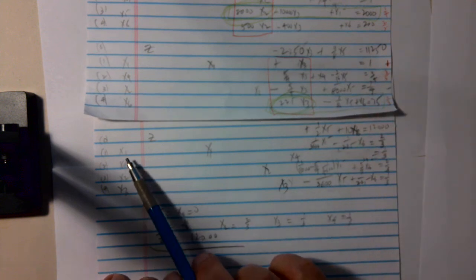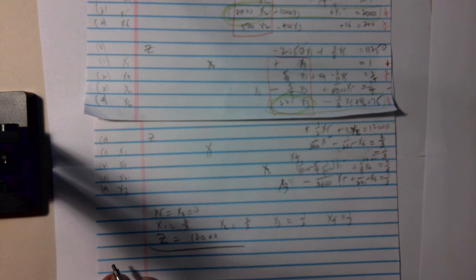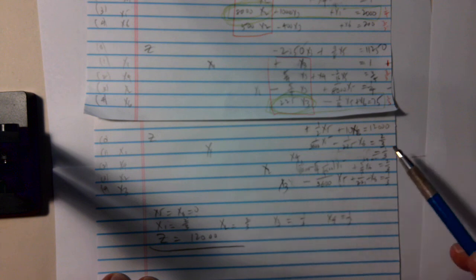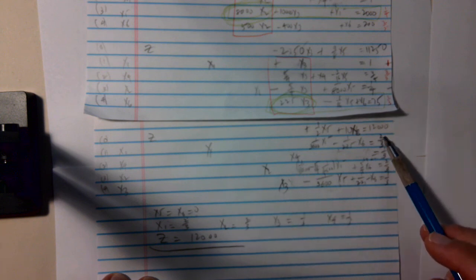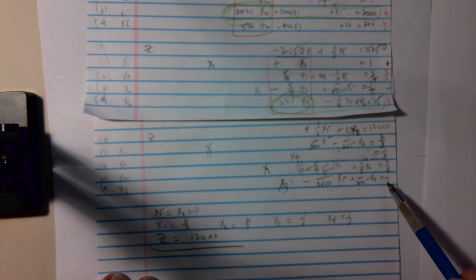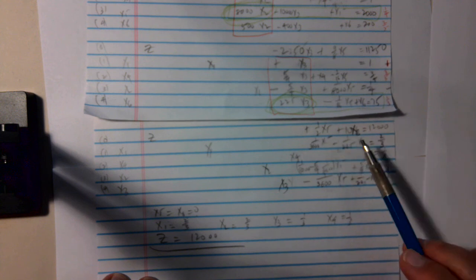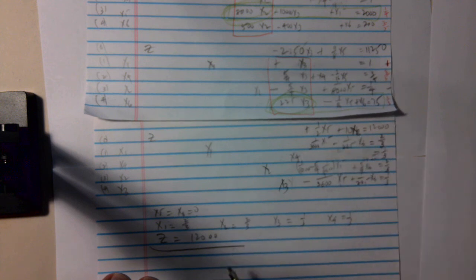And my basic variables are X1, X2, X3, X4. So, the non-basic variables, X5 and X6, are set equal to 0. So, when you solve these equations for X1, X2, X3, and X4, these are the values that you get. X1 is two-thirds, X2 is two-thirds, X3, and X4 are one-third. And for those values, with X5 and X6 is zero, Z is 12,000.